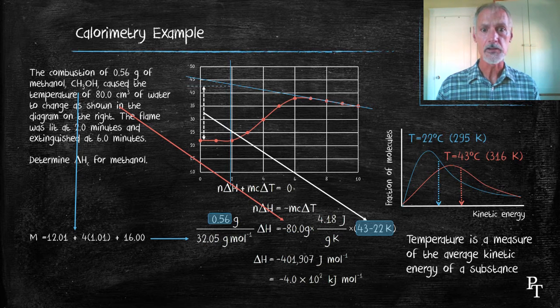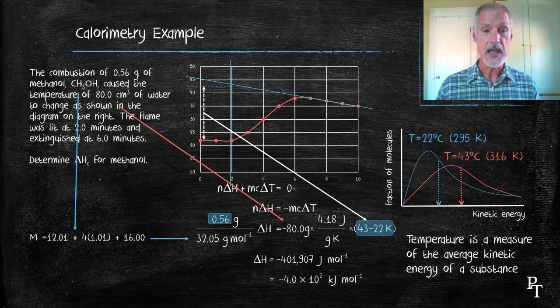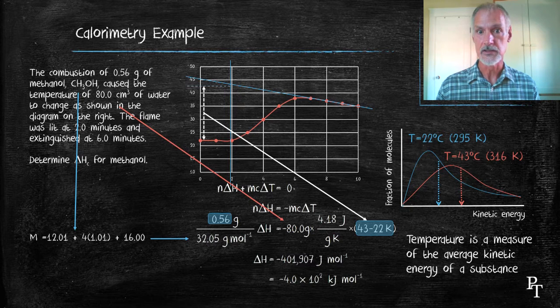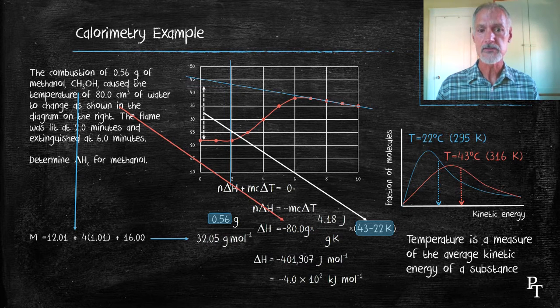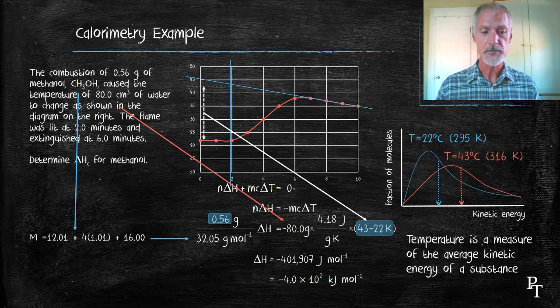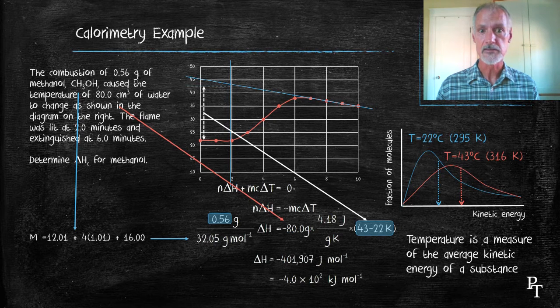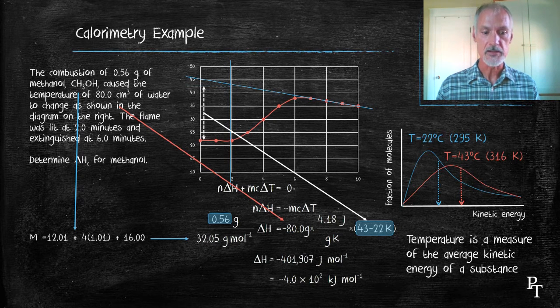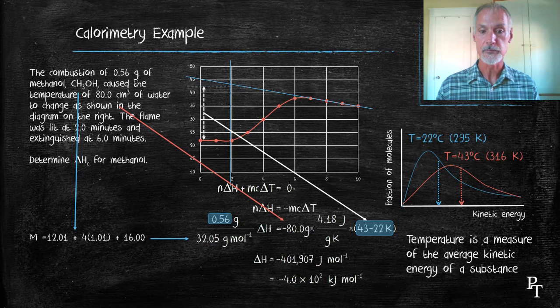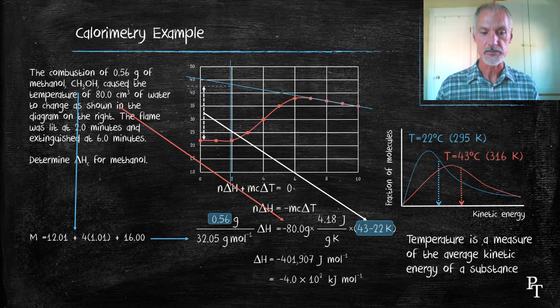And the second thing I'm going to note is significant digits. My mass has only two, my temperature change only two. So I have to round this number to two significant digits, which would be around negative 400 kilojoules, or as shown here, negative 4.0 times 10² kilojoules per mole. Note the negative sign that the burning is an exothermic reaction.